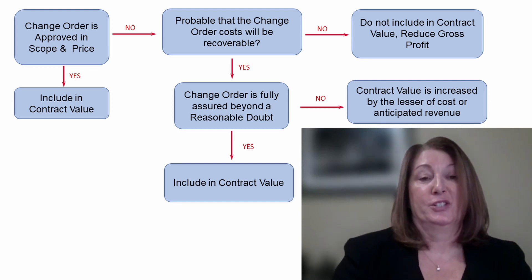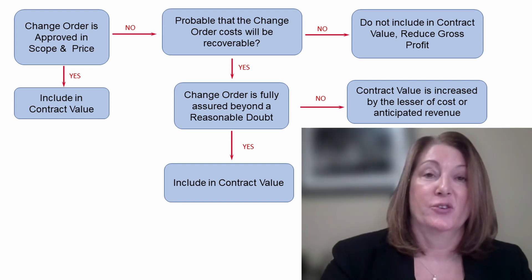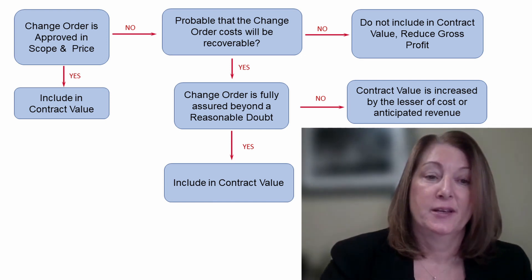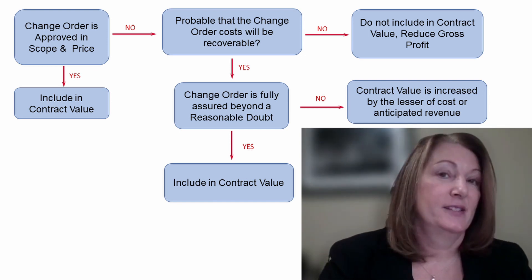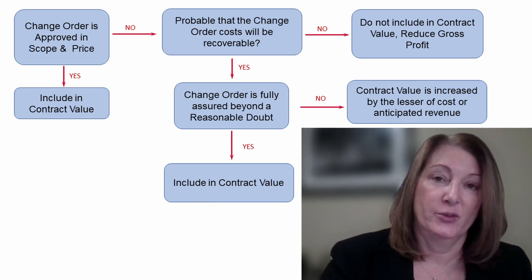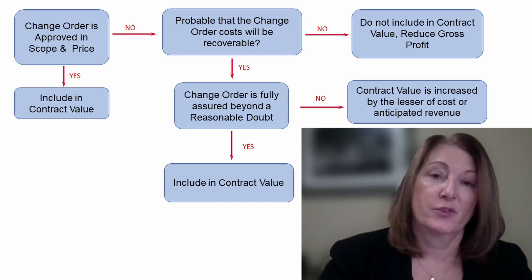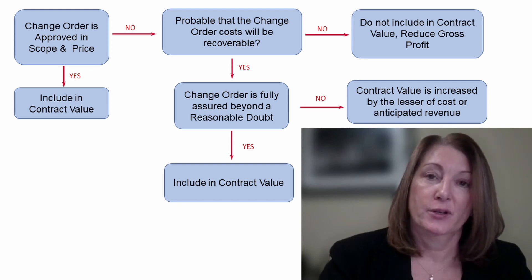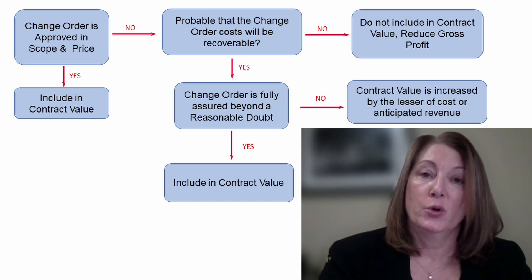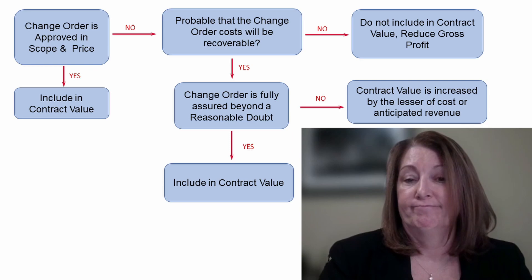If your answer is yes — approval and receipt of the change order is assured beyond a reasonable doubt — then you'll recognize the value of the change order in your contract value. You will estimate the cost for this change order and you will pick up the gross profit based on your percent complete.